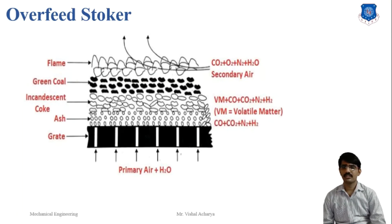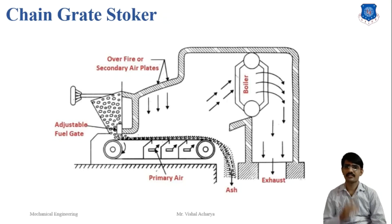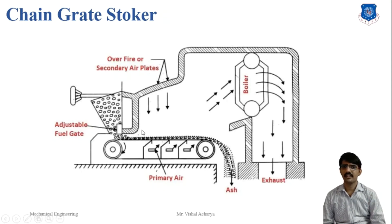The overfeed stoker is divided into two types. First is the chain grate stoker. In the chain grate stoker, the grate is made of cast iron, and the cast iron pieces are connected with links using pins or bars. Two pulleys are connected with the moving part of the chain grate. An adjustable fuel gate decides the fuel height — or coal height — at the grate level, also called the feeder rate of the coal.